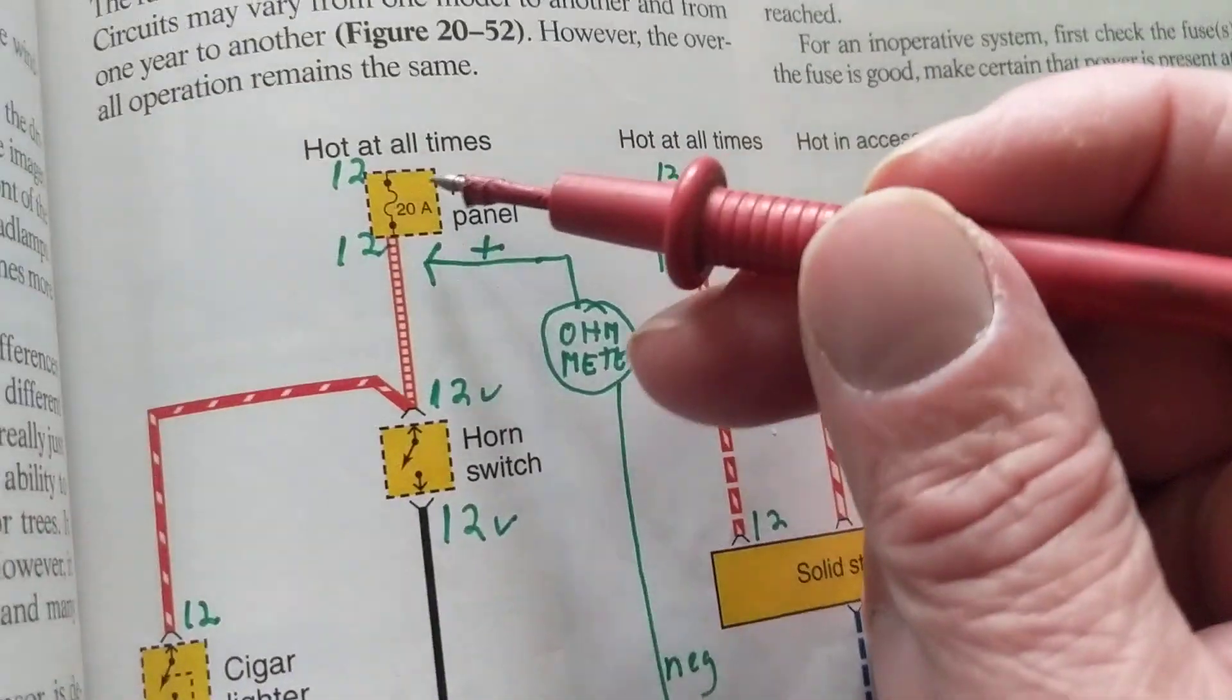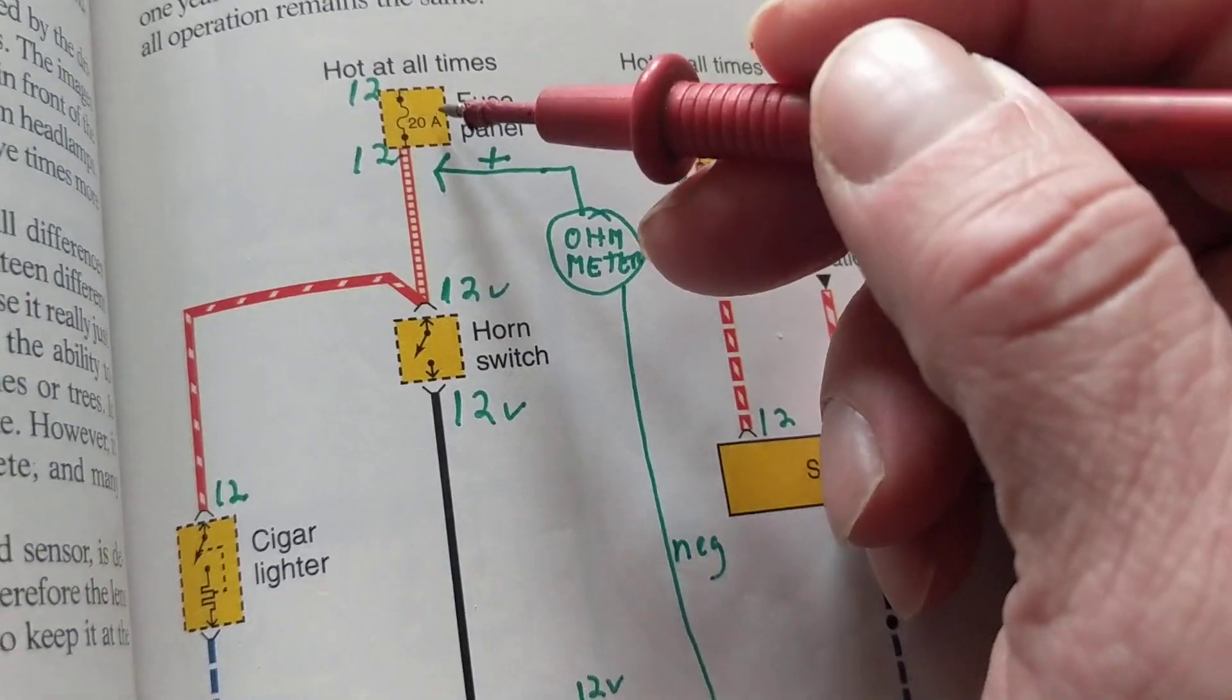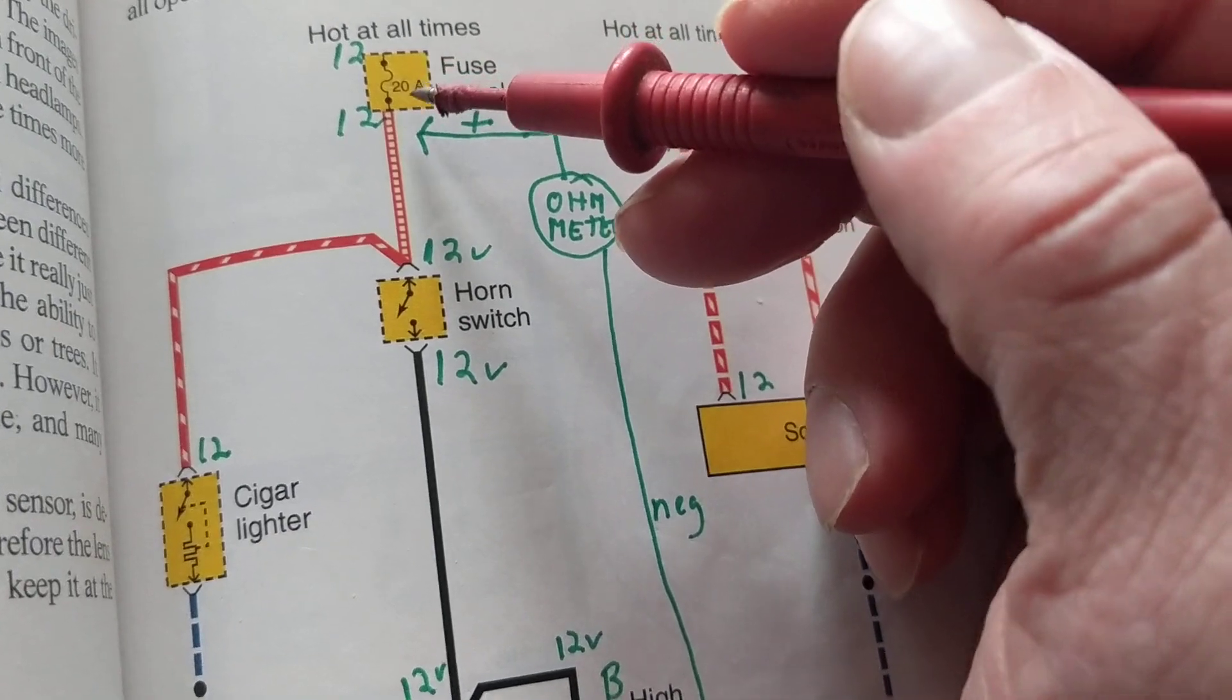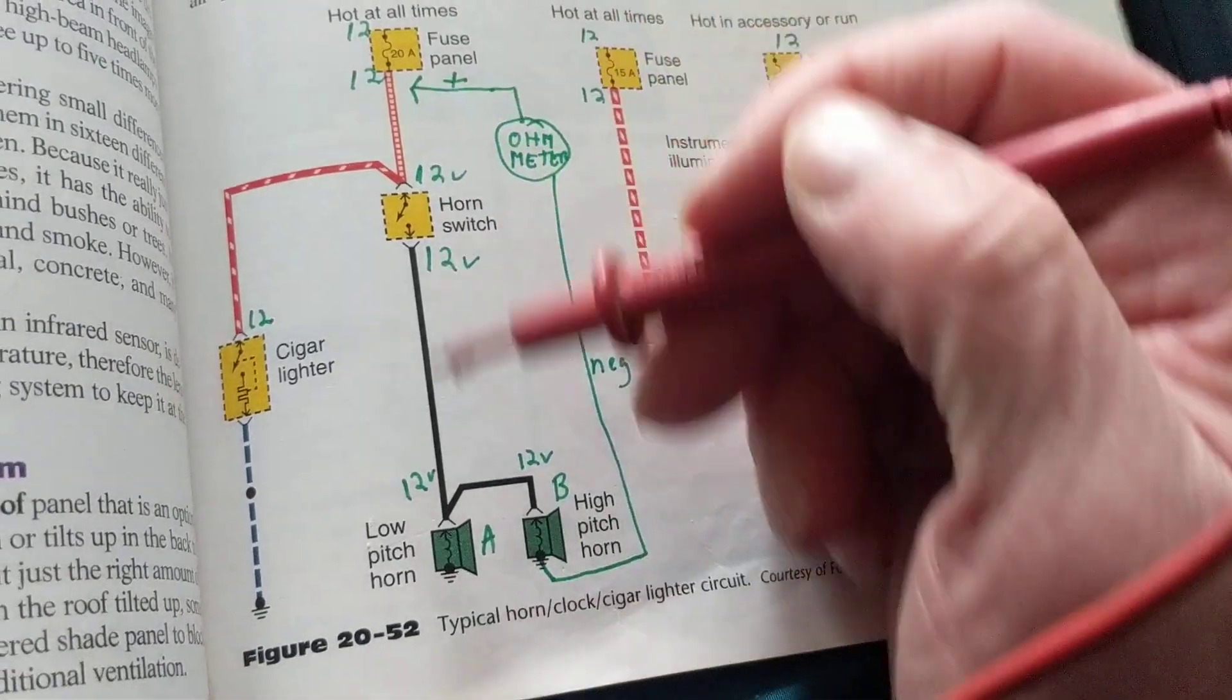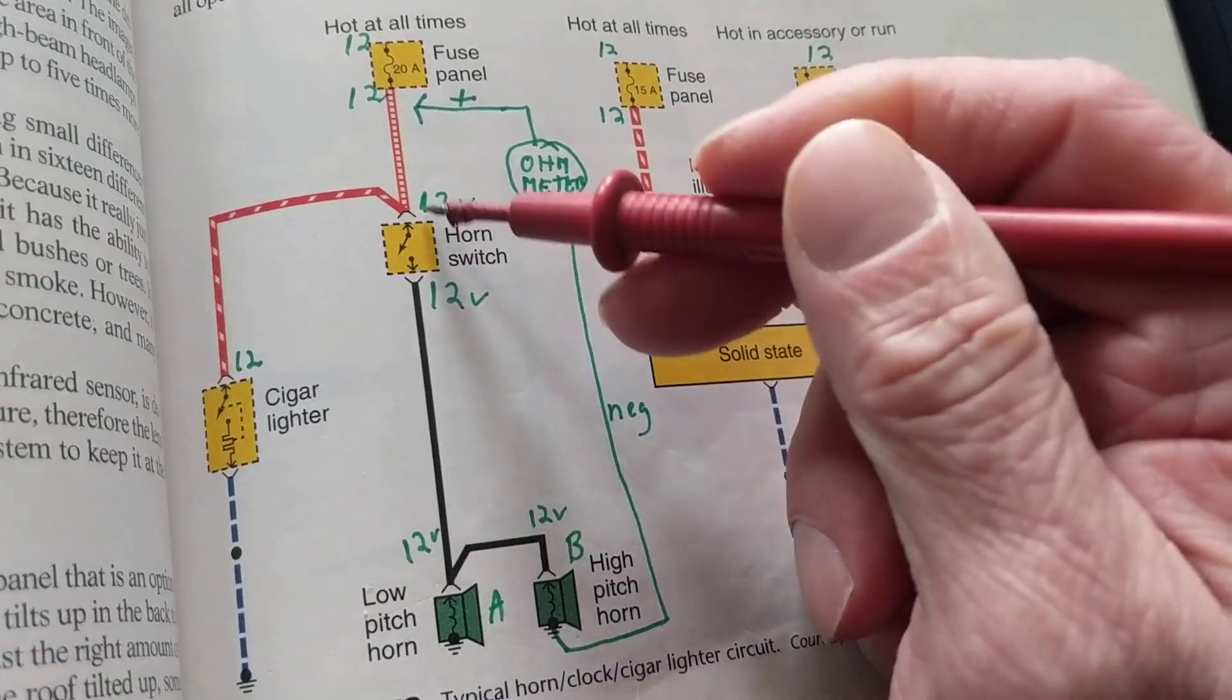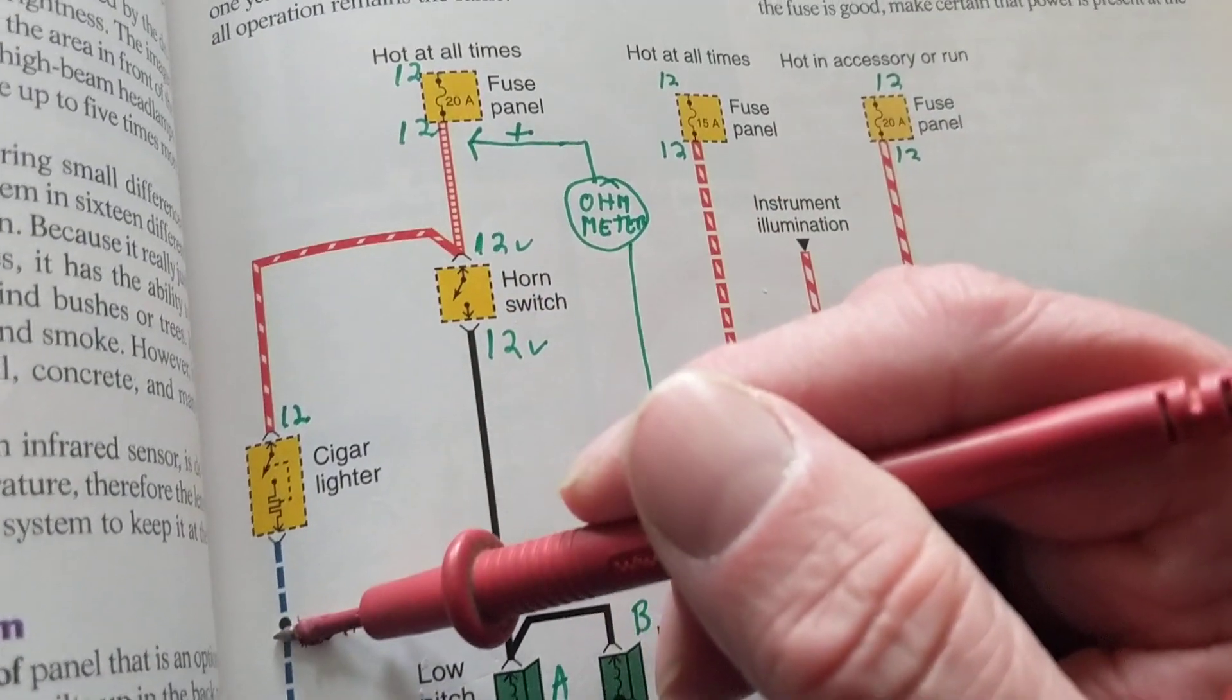Now it popped. Let's say we changed it once, twice. After that we get the hint there's a short somewhere from here to ground somewhere. It could be either the horn circuit. It could be either the cigarette lighter circuit.